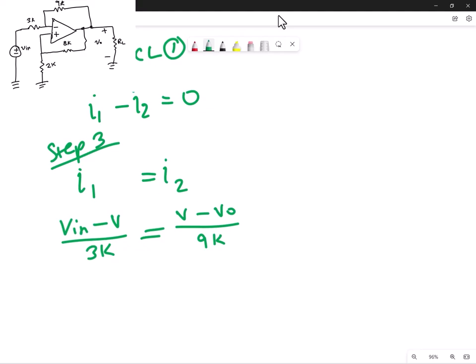I'll multiply both sides by 9 kiloohms. So I've got my 9k divided by 3k will give me 3. So that's 3 times that expression. 9k divided by 9k will give me 1. So I don't really need the brackets, but I'm just showing it to make it simpler. And then that drops down to 3Vin minus 3V is equal to V minus VO. Great.